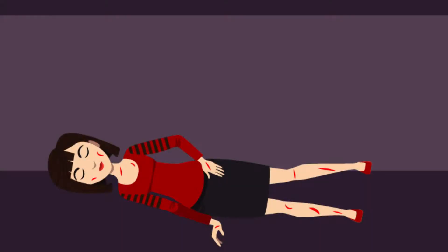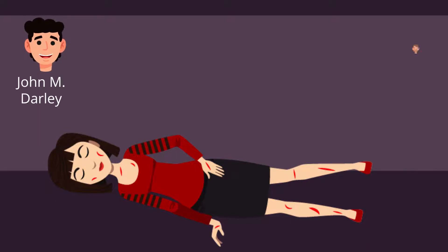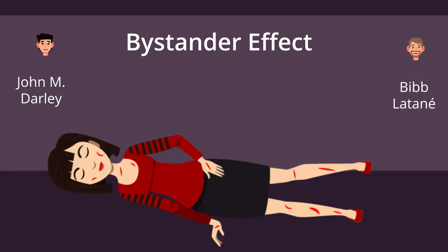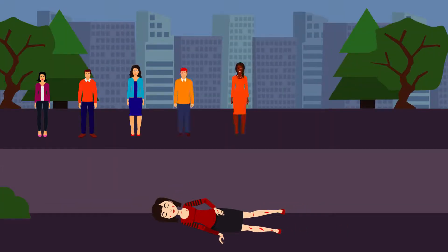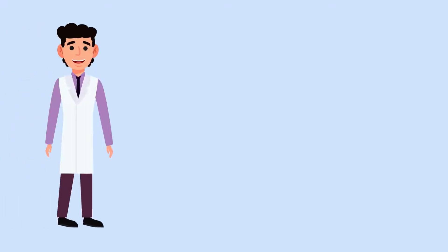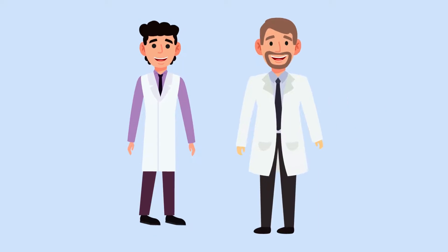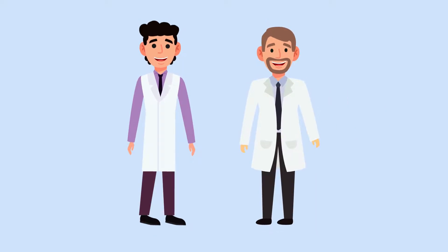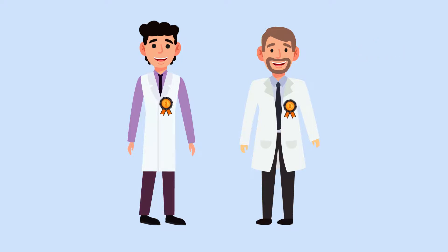After the murder of Kitty Genovese in 1964, social psychologists John M. Darley and Bibb Latané first became interested in the bystander effect. Kitty's death received much attention because she was violently stabbed while numerous individuals stood by but failed to intervene. Darley and Latané first tested and popularized the bystander effect in 1968. The experiment they used to test it has become one of the experiments with the most reliable results in social psychology.